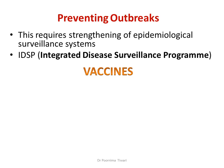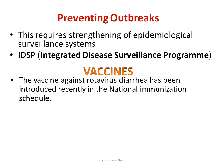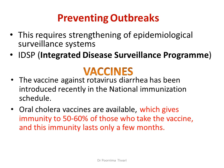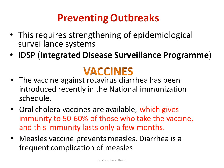Vaccines for prevention of diarrhea include the rotavirus vaccine, which directly targets diarrhea, and the oral cholera vaccine. The measles vaccine indirectly prevents diarrhea because measles is frequently followed by diarrhea as a complication — so preventing measles also prevents this common complication.